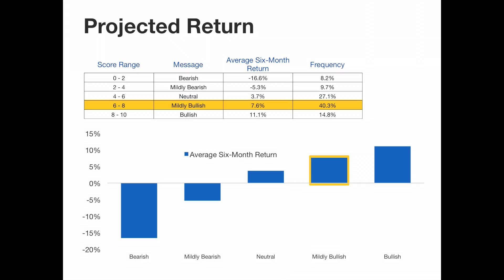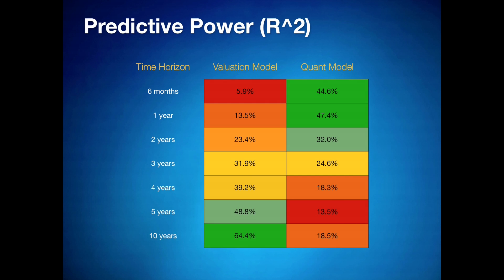So we've looked at two models — one telling us the market is overvalued and we should expect below-average long-term returns, and the other telling us market conditions are bullish so we should expect above-average returns in the short term. How do we reconcile these two messages? We can look at the predictive power of each model over different time frames, using R-squared as our measure, through a table showing time frames from six months all the way out to ten years.